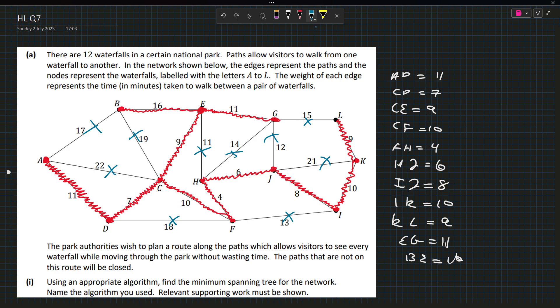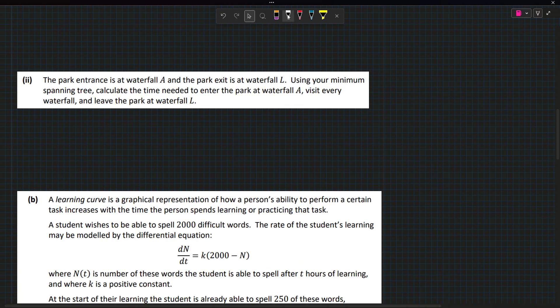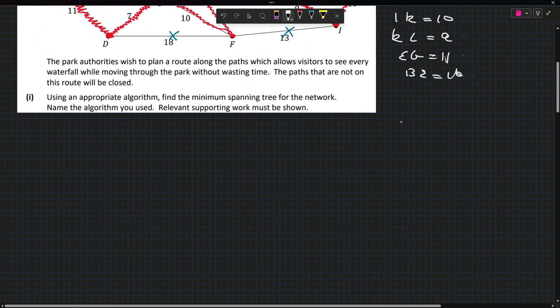So we should have 11 total arcs. So 1, 2, 3, 4, 5, 6, 7, 8, 9, 10, 11. Cool. The park enters at A. Using minimum spanning tree, find the time needed to enter the park at A, visit every waterfall and leave the park at L.